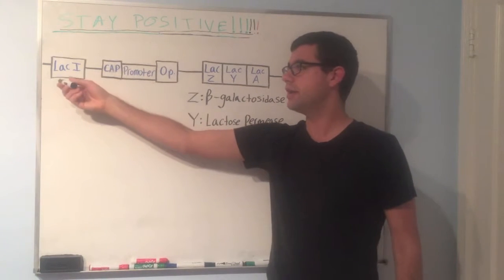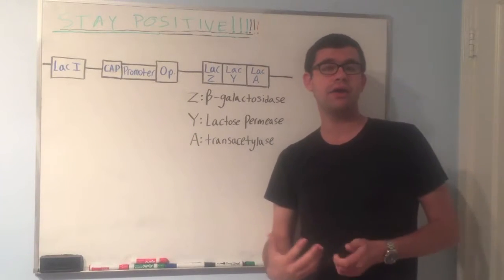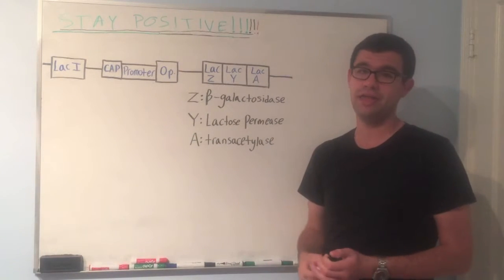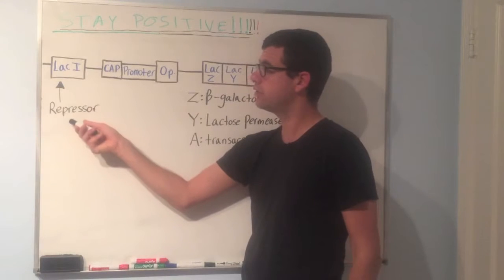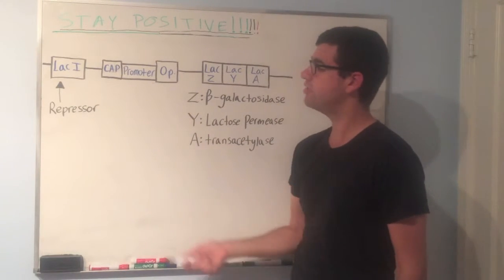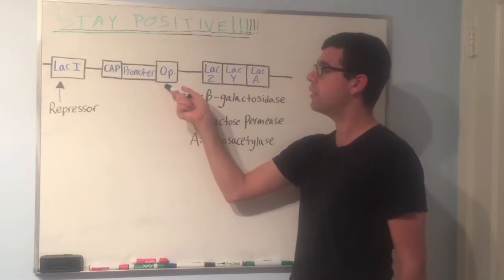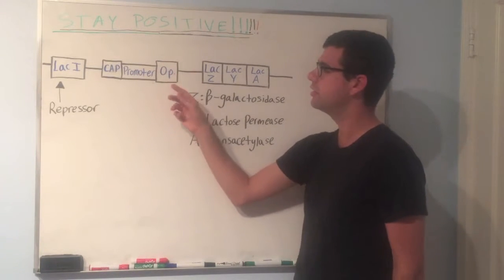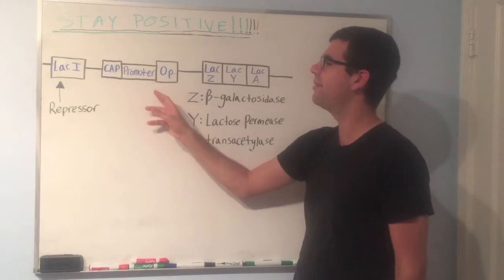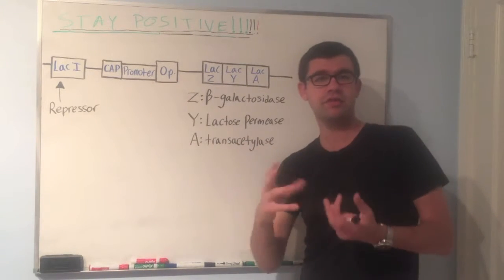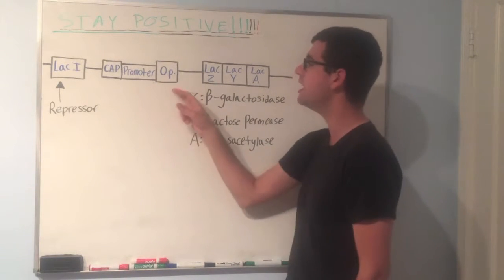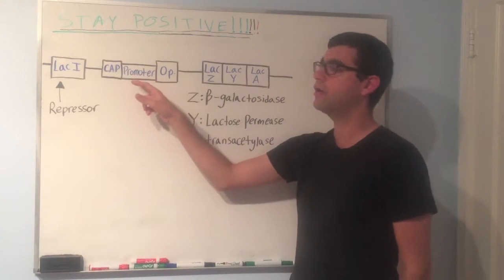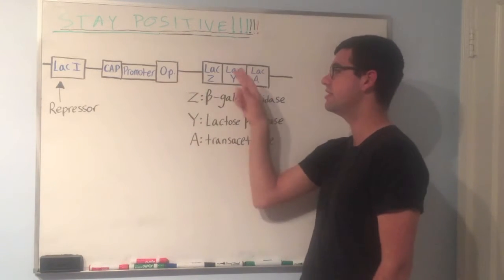It's going to do that using a gene called LAC-I. LAC-I codes for a repressor. Let's write that out. Okay, so LAC-I codes for a repressor. And what the repressor is going to do is it's going to bind right here to the operator region. That's OP, short for operator, couldn't fit it all on a square. So it'll bind to the operator because it's sort of an induced fit model. It'll stay there and physically block RNA polymerase from making its way to these genes.